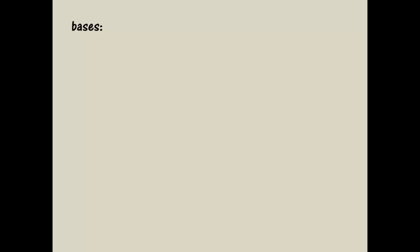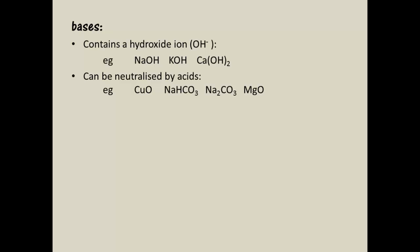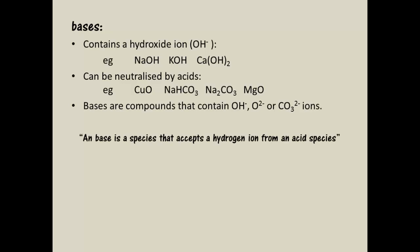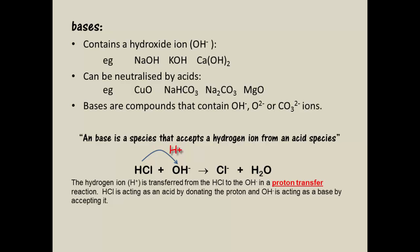Now let's look at bases. Previously, you might have said that a base contains a hydroxide ion, or that bases can be neutralised by acids, or given a definition referring to other anions — that bases are compounds that contain either a hydroxide, oxide or carbonate ion. All these three definitions are often used in junior science at Year 11, but none of them are adequate when describing what a base actually is. A better definition of a base is that it is a species that can accept a hydrogen ion from an acid species in a proton transfer reaction. The hydrogen ion is transferred from the hydrogen chloride molecule to the hydroxide ion in a proton transfer reaction — hydrogen chloride is acting as an acid by donating the proton, and hydroxide is acting as a base by accepting it.